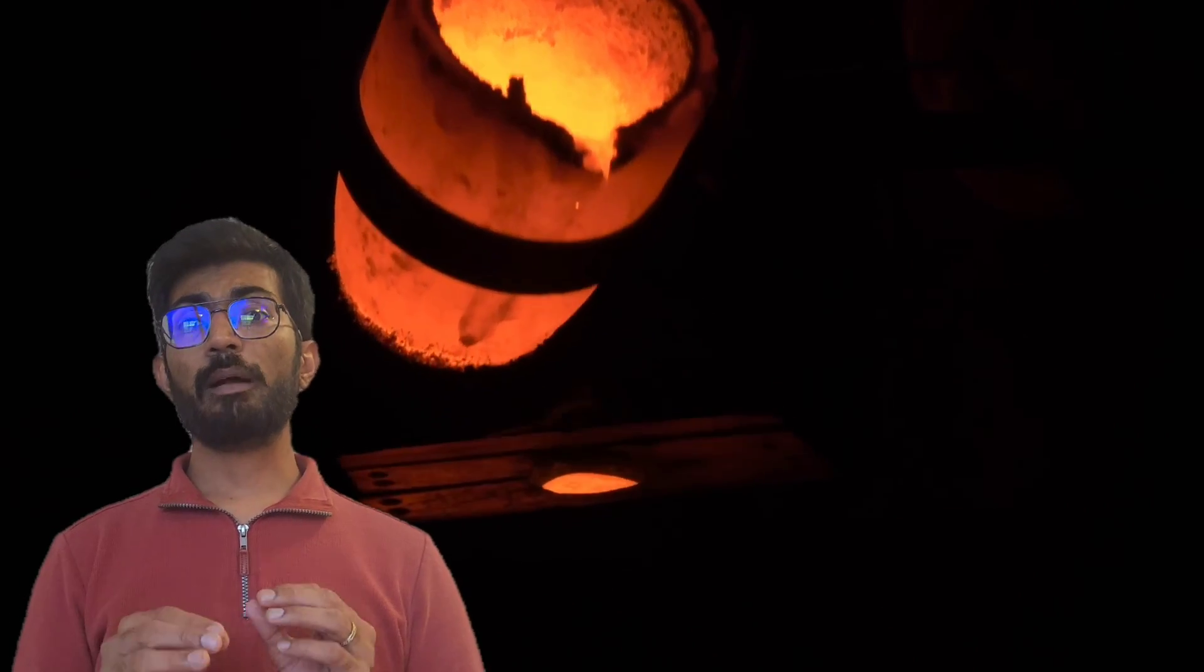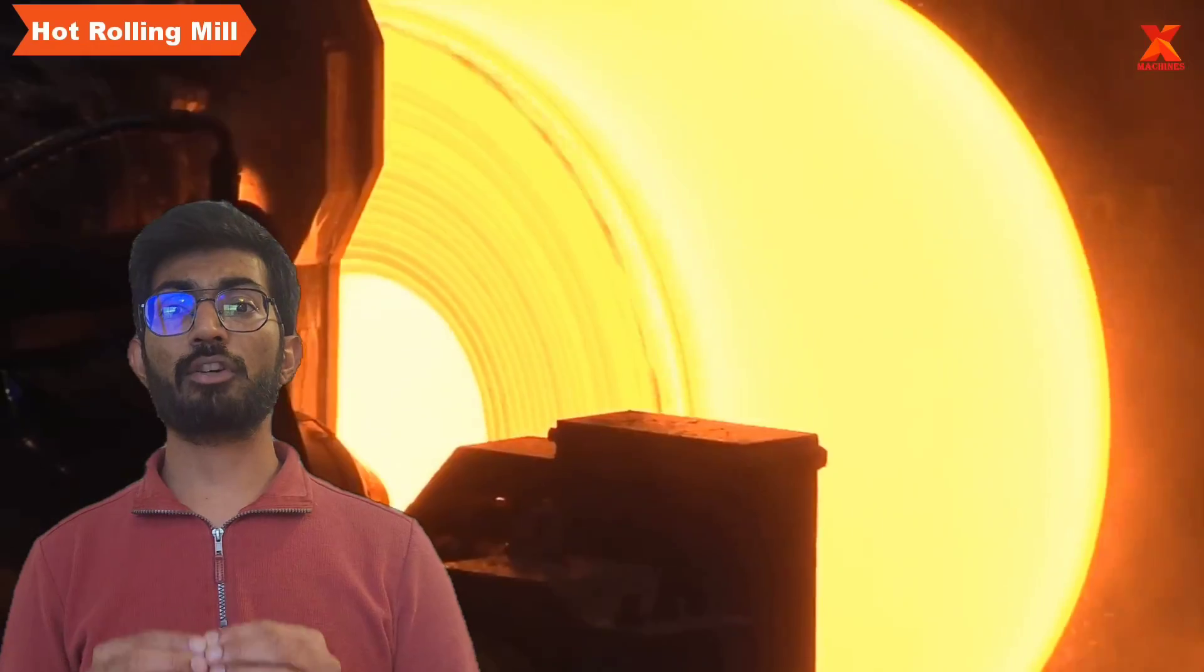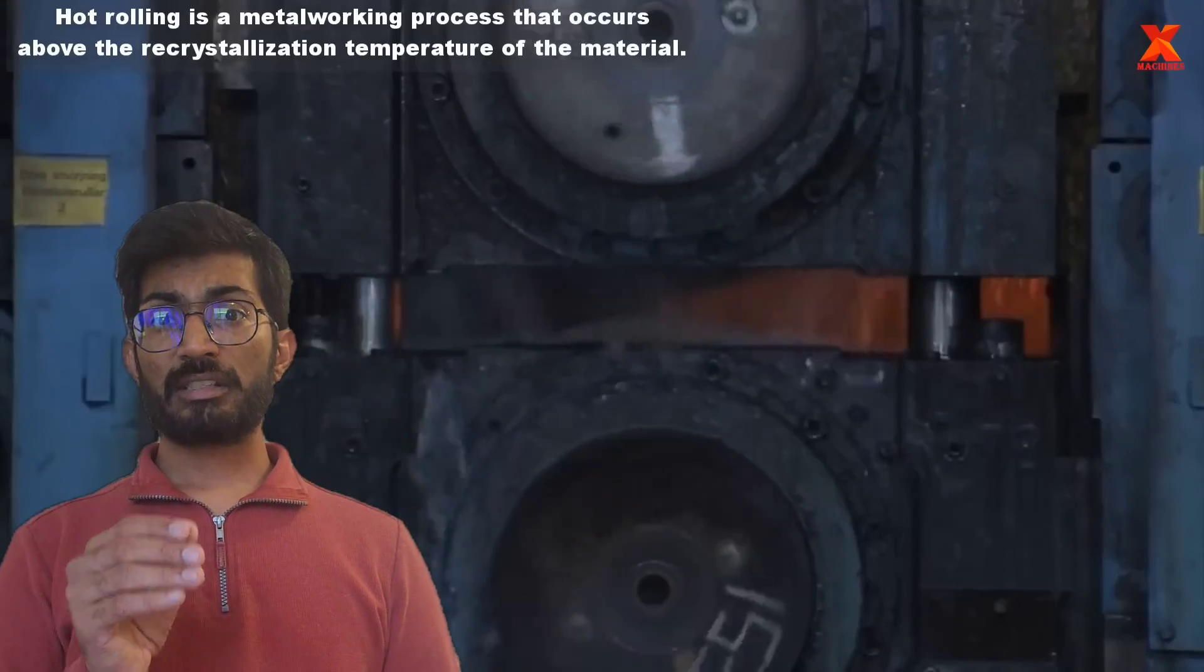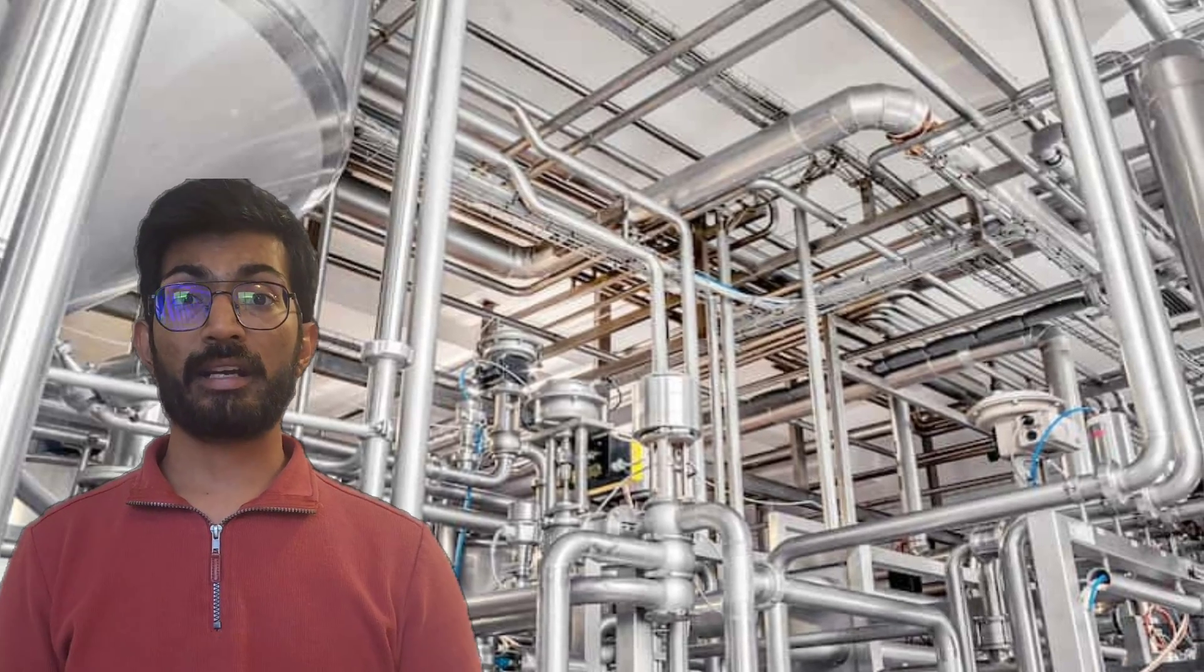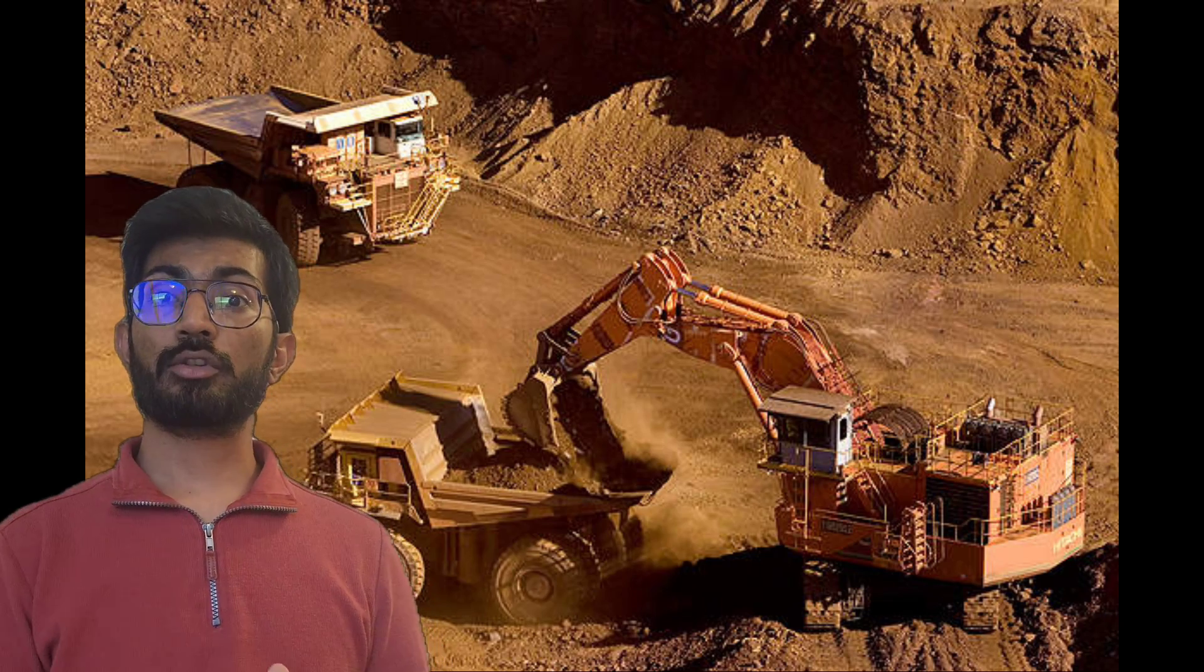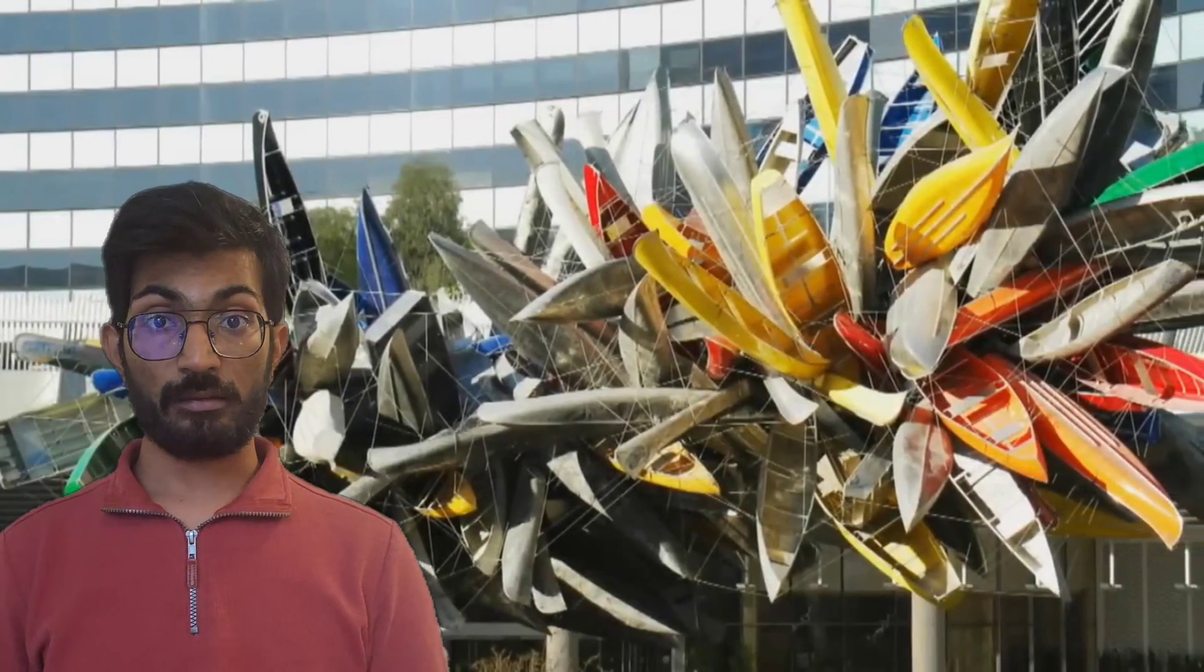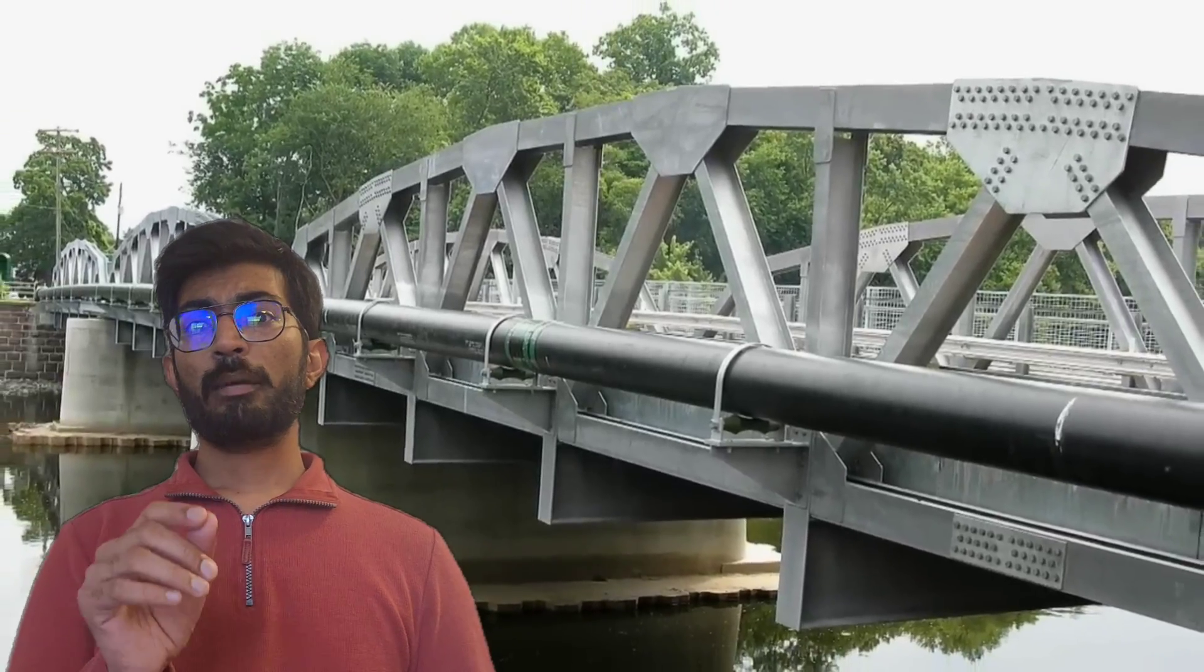I'm surprised to know there are more than 100 variants of steel based on different combinations and compositions required by different industry standards. For example, stainless steel, which looks extremely bright, is used in architectural activities and surgical equipment. On the other hand, black steel, which is mild steel, is used in construction and other industry applications where we don't require that high quality.